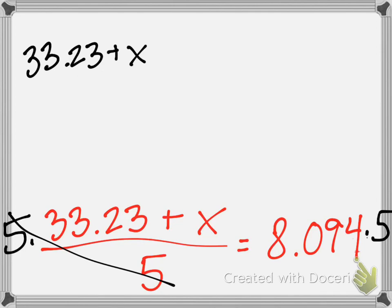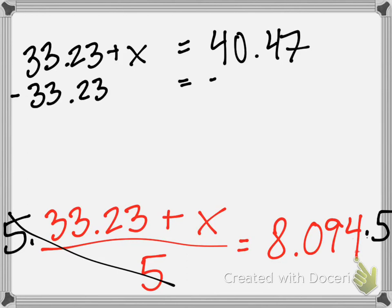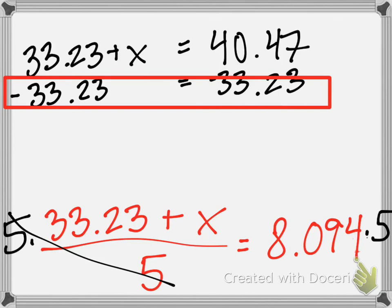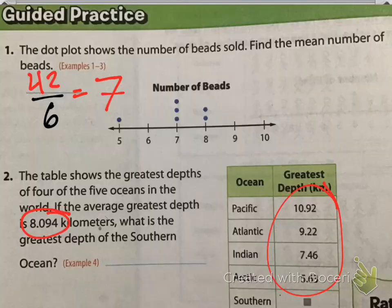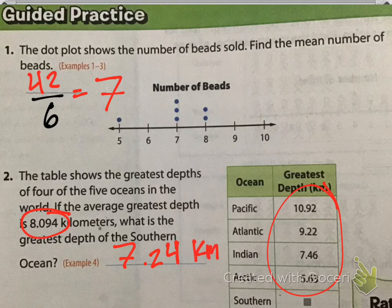For this side, we now get 33.23 plus x. Do not feel the urge to multiply 5 on the top. It's cross-cancelling. And then, for this other one, we have the 8.094 times 5 gives us 40.47. Yet again, the last thing that we do to isolate our variable is we're going to be doing the subtraction. Here, when I'm subtracting, this cancels out. I am now left with x equals. And I'm doing the subtraction here. I get 7.24. So, my answer is 7.24 kilometers deep.